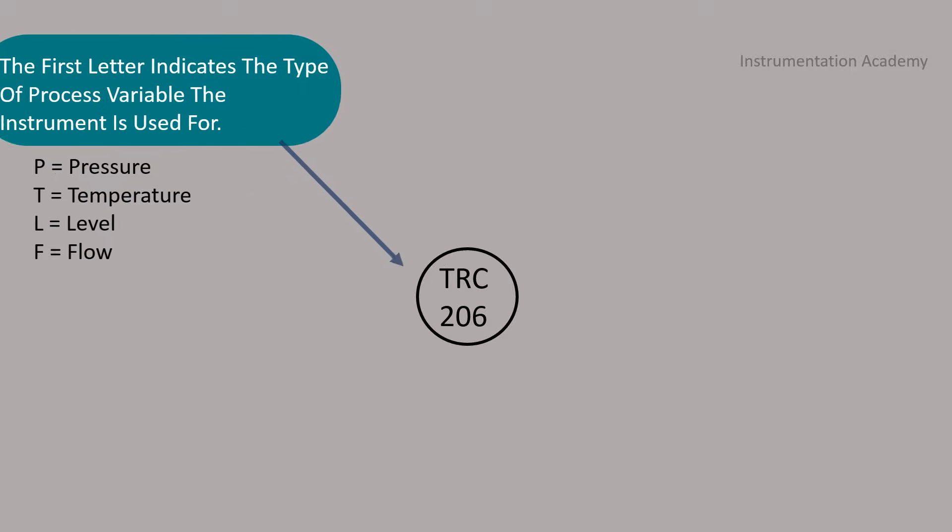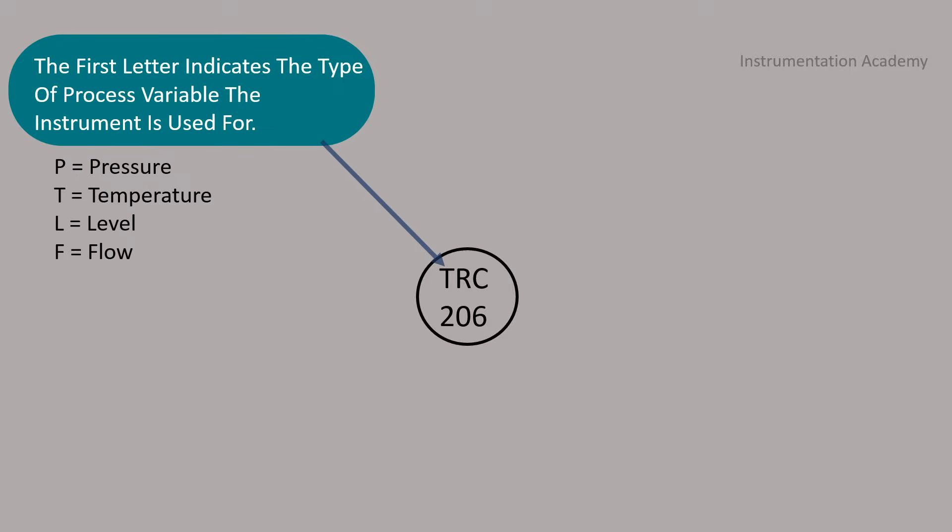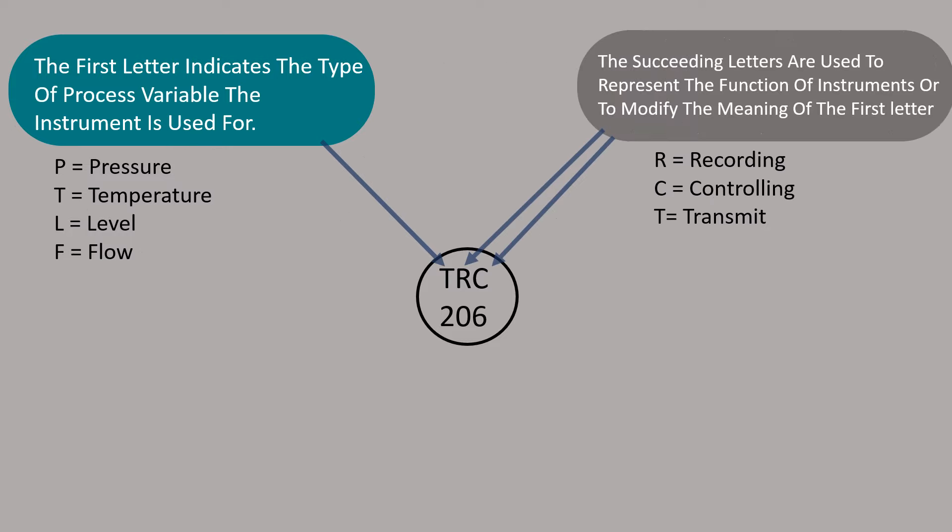In this instrument tag, the first letter in the upper line indicates the type of process variable the instrument is used for. The succeeding letters are used to represent the function of instruments. The lower line represents the loop number.